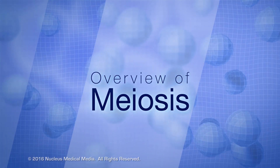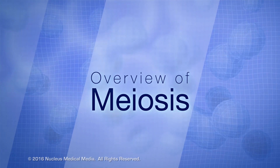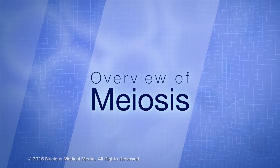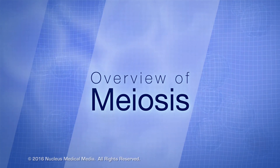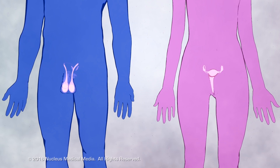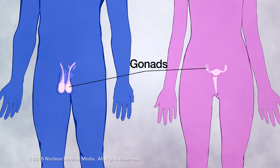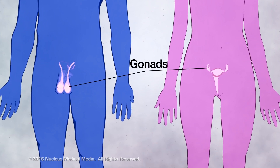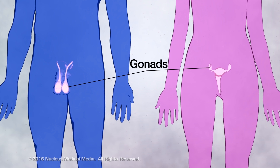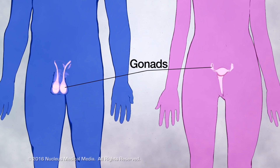In this lesson, we'll look at an overview of the type of cell division called meiosis. Meiosis takes place in an organism's reproductive structures, called gonads, for the sole purpose of producing haploid gametes that are genetically different.